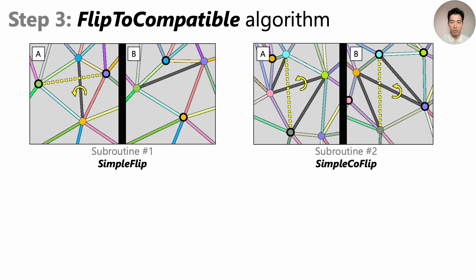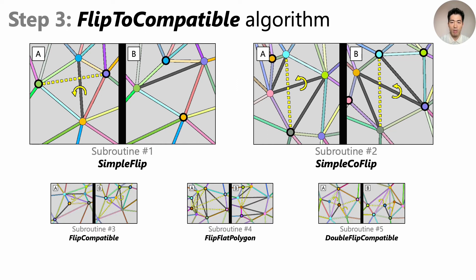Here's another subroutine, which is also simple. For these two incompatible edges, flipping them simultaneously will make them compatible. There are three more subroutines, and please refer to the paper for more details. We repeat applying these subroutines until no more changes are made.